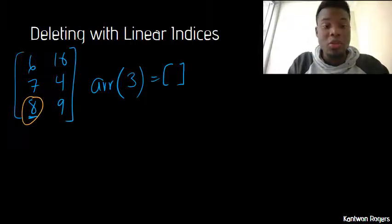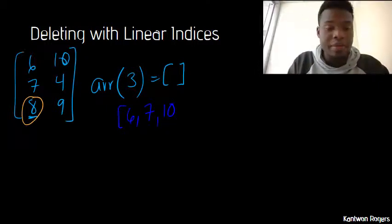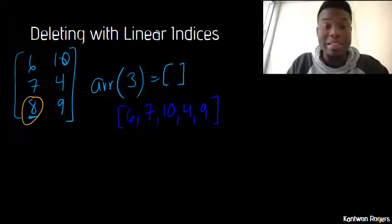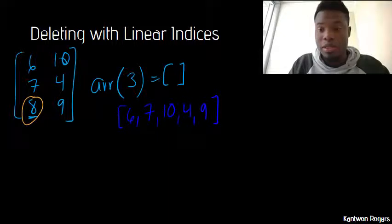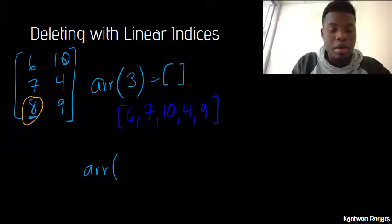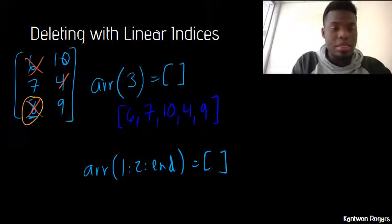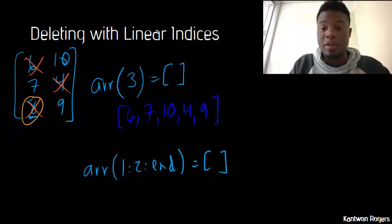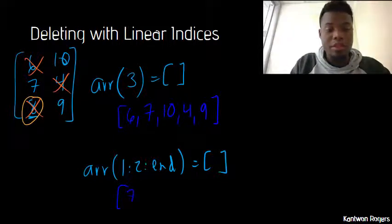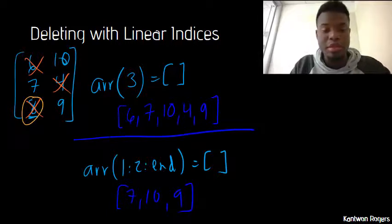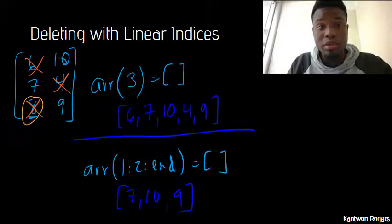So in this case here, after this line of code is executed, my array is no longer a two-dimensional entity. It's going to be 6, 7, 10, 4, and 9. It's just that the 8 is not there anymore. And so I can delete multiple spots as well. So let's say I had my original array again and I said something like array from 1 to 2 to end is equal to empty brackets. So I want to delete every other number. So in this case here, I would want to delete the 6, the 8, and the 4. So all I'm left with is the 7, 10, and 9. So therefore my array at the end of this would be 7, 10, and 9. So these are just two separate examples here. And so deleting is very similar as deleting with vectors.